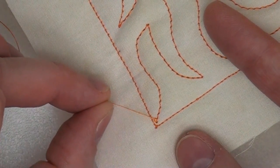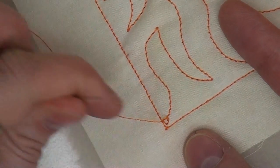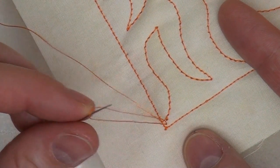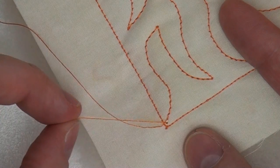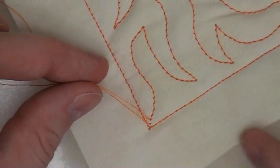So what I want to do is give that top thread a tug and that's going to pull up a little loop. Insert the tip of my needle into that loop, give it a gentle tug, and that's going to come to the surface. So now I have two threads on the surface of the quilt.